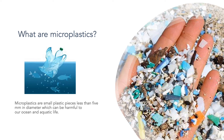So what are microplastics? As the name implies, they are small plastic pieces less than 5 millimeters in diameter and they can be extremely harmful to our ocean and aquatic life. Plastic is the most prevalent type of marine debris found in our oceans, and these tiny pieces of degraded plastic have appeared in every region of our planet.